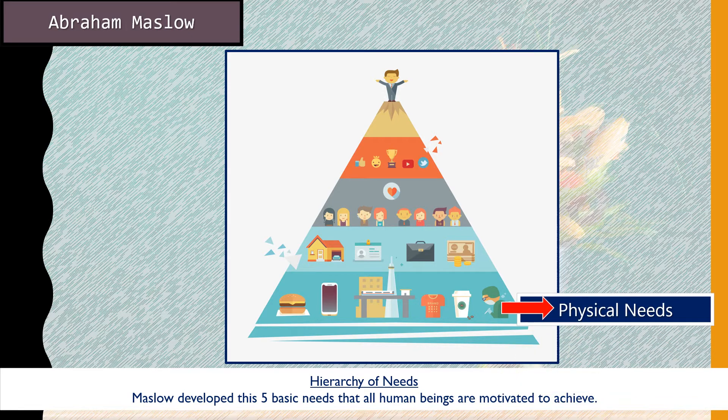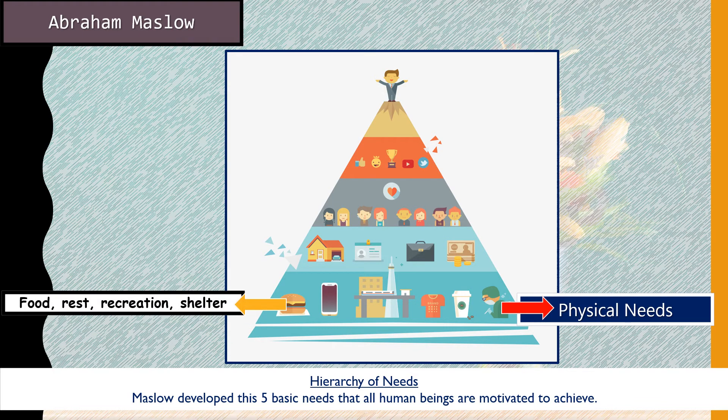At the base of the pyramid is physical needs. Maslow says every human being wants to fulfill these physical needs — for example, having food, clothes, water, and air to breathe. These are the foundational physical needs a human being requires.